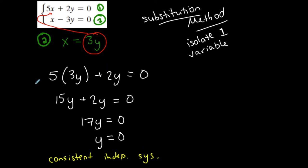Consistent, independent system. That situation where the two lines intersect. There is a point of intersection.